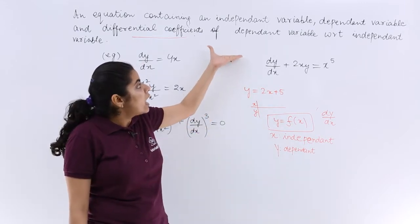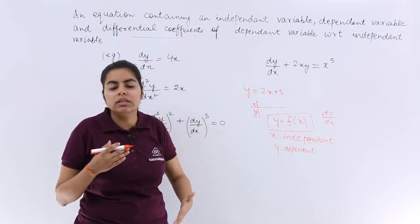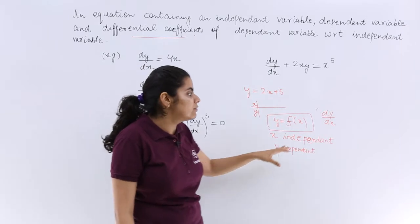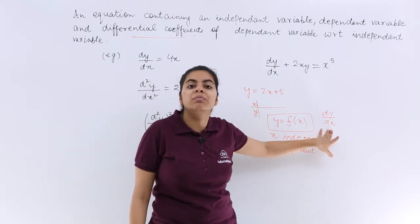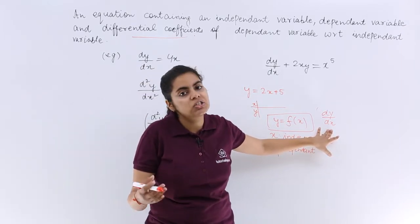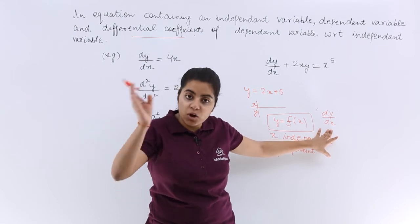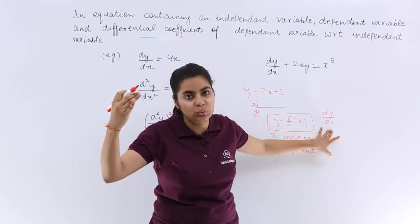The other thing is that these have variable orders. That means it is not always dy by dx. It can be d2y by dx square, d3y by dx cube, and also there can be whole square, whole cube to that too.